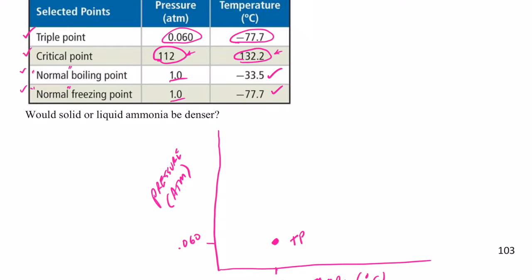My critical point, that's 112 atmospheres so we're going to break my graph right here. We're going to say that's 112 atm and it looks like my critical temperature is 132.2 degrees Celsius. So we're going to break my graph right here. We're going to call this 132.2 degrees Celsius and we'll put a point right there and that is my critical temperature.